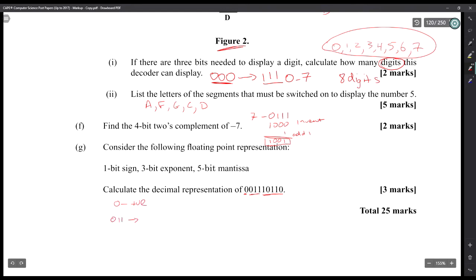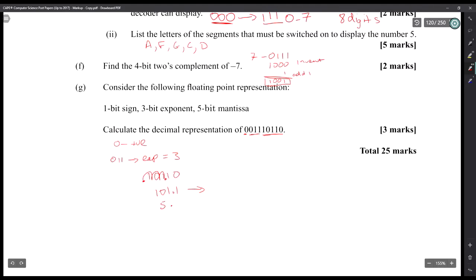And then we move the decimal point three places to the right in the mantissa, which is 10110. We'll get 1101.1, and then that translates to 5.5, because the binary calculations would give us a half for the 1 on the right-hand side, and 4 plus 1 on the left-hand side. So 5.5 is the answer there.